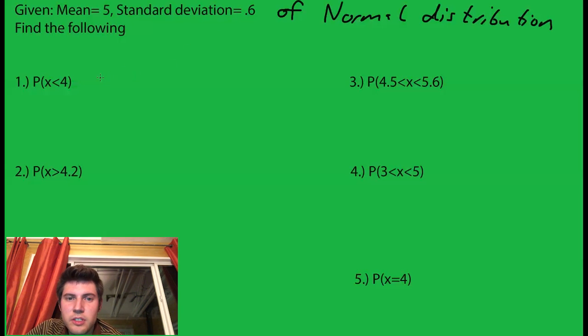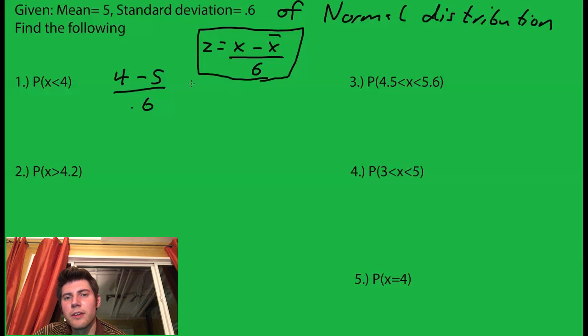So what is the z score? The z score is this value minus the mean over the standard deviation. So if we want to write it out, it's your x minus your mean over your standard deviation. We'll be using this formula for all these. Well, 4 minus 5 is negative 1 over 0.6, which is negative 1.67. So this is our z score.